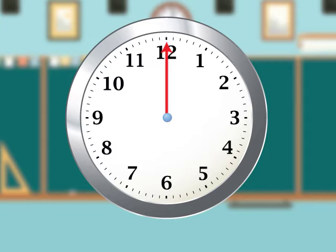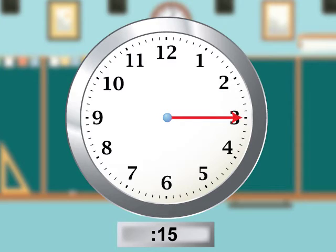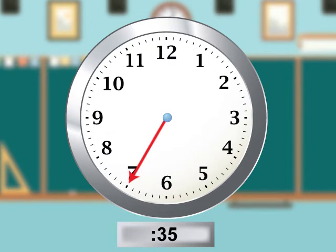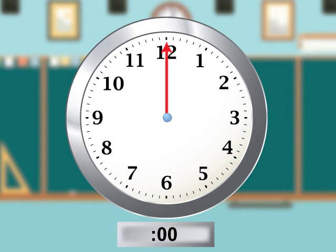Here is a tour of times around the clock in 5-minute increments: 5 minutes after the hour, 10 minutes after the hour, 15 minutes after the hour, 20 minutes after the hour, 25 minutes after the hour, 30 minutes after the hour, 35 minutes after the hour, 40 minutes after the hour, 45 minutes after the hour, 50 minutes after the hour, 55 minutes after the hour, 0 minutes after the hour.